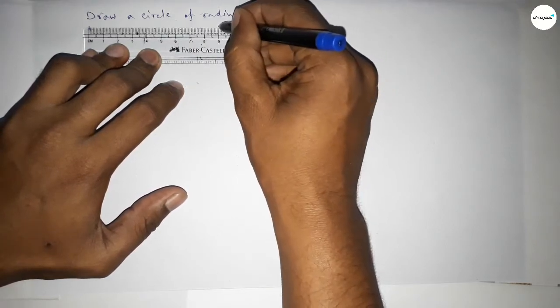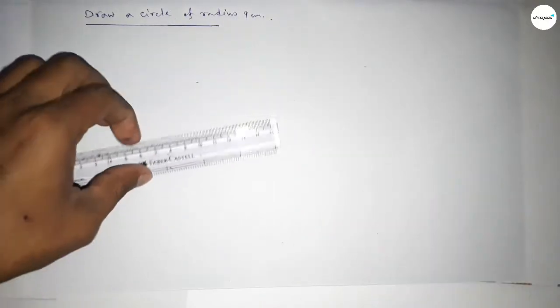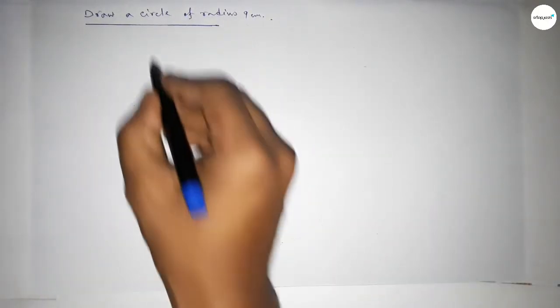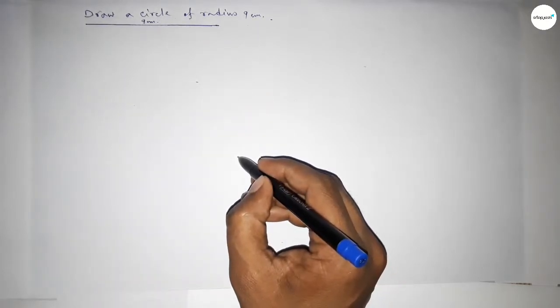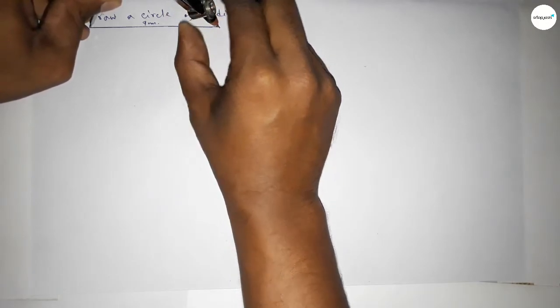So first we have to draw a line of length 9 centimeter. So this is a 9 centimeter line. Next, we have to draw taking here a point. Next, taking the length 9 centimeter by using compass by this way.